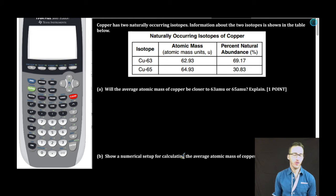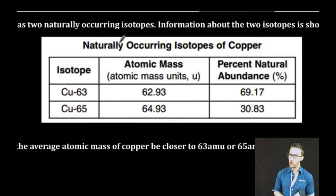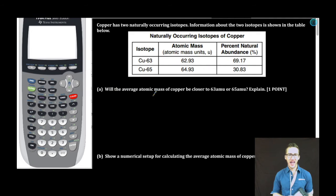Hey, what's up everybody? Who is ready for a thriller of a free response? I've been waiting all day for this. Copper has two naturally occurring isotopes. Information about the two isotopes is shown in the table below. Part A: Will the average atomic mass of copper be closer to 63 AMU or 65 AMU? Explain.